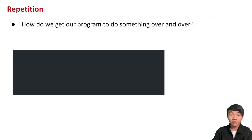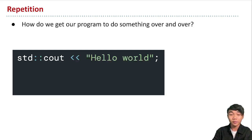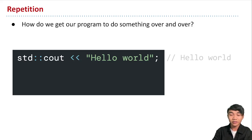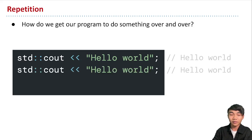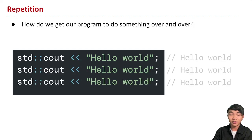With what we know so far, how would we tell our program to repeat something over and over? Say as an example, we wanted to print out hello world to the terminal more than once. I could write down the cout statement and print out hello world, then copy and paste it as many times as I want. This works, but it could get frustrating if I wanted to repeat this code a large number of times.